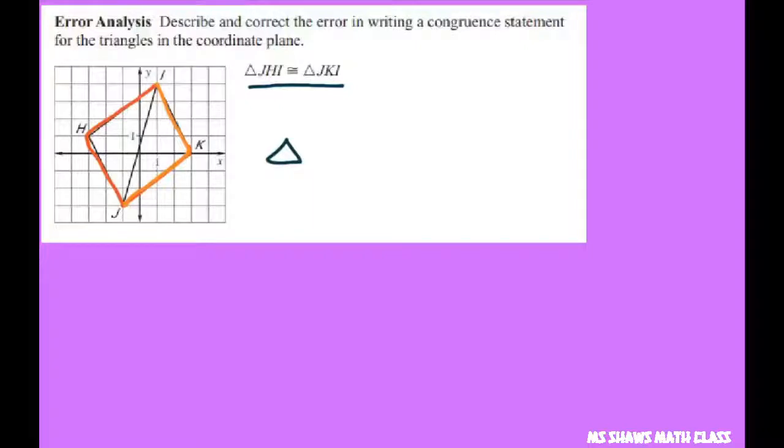So what you want to do is write triangle JHI is congruent to triangle IKJ.